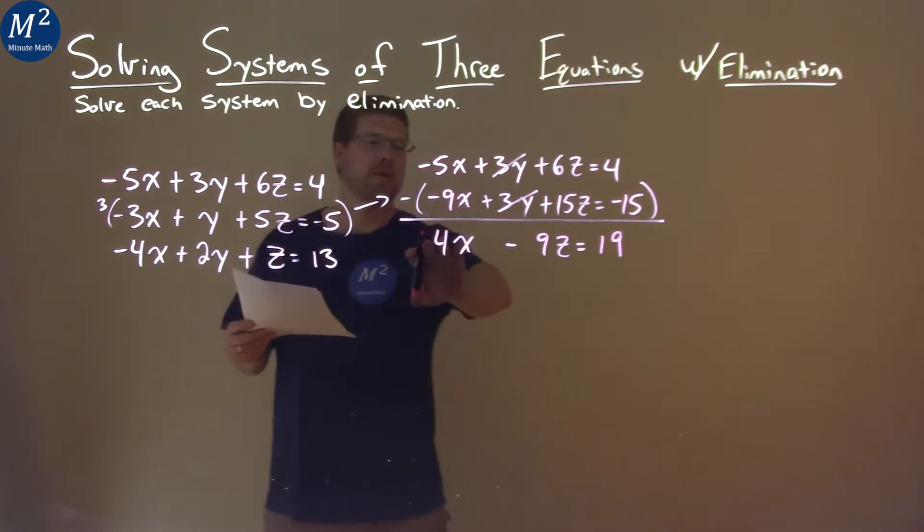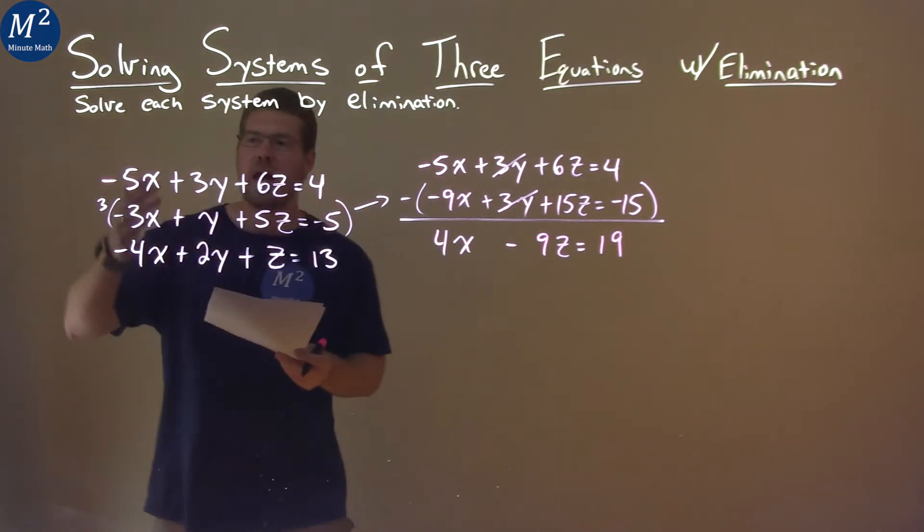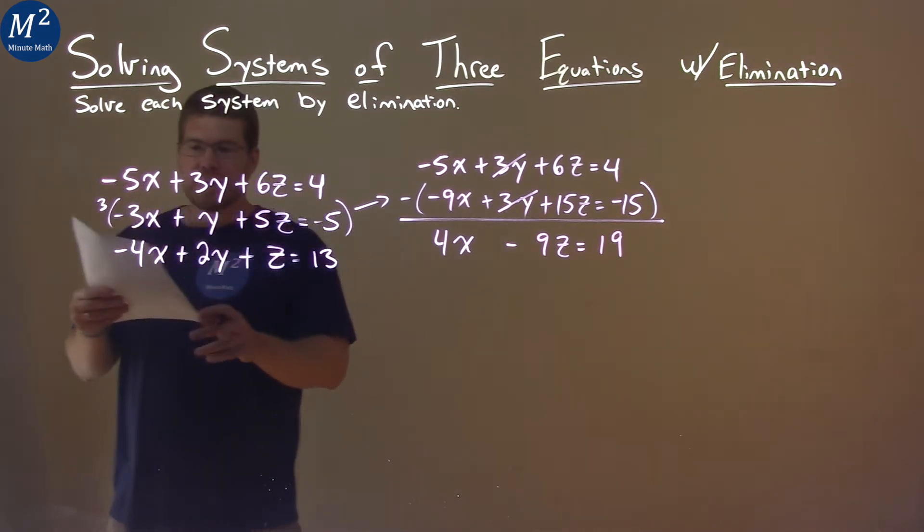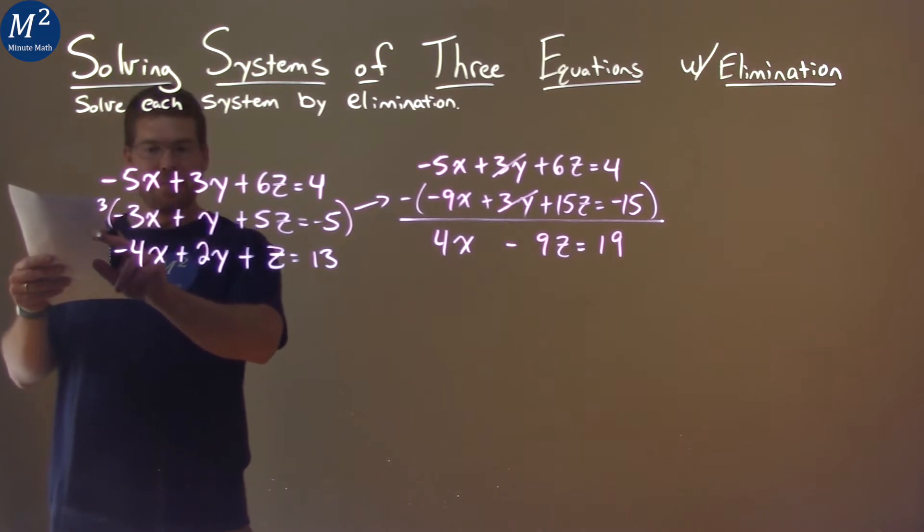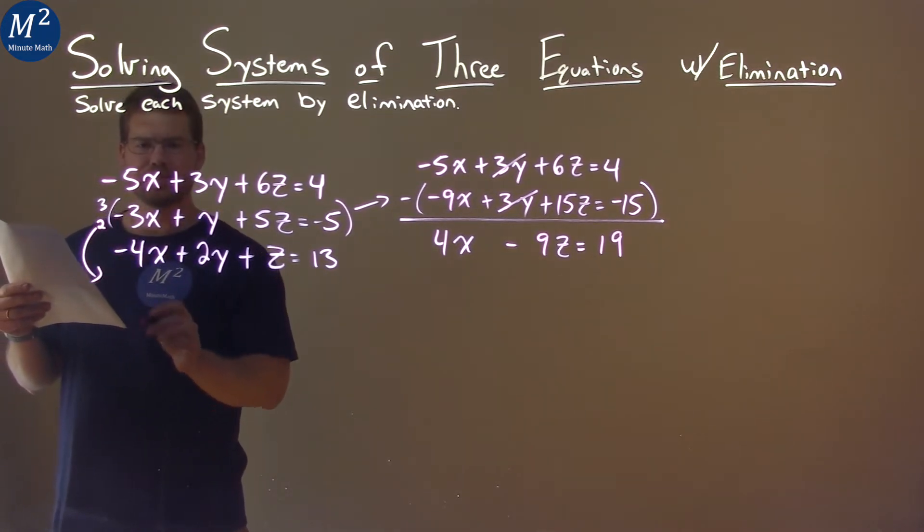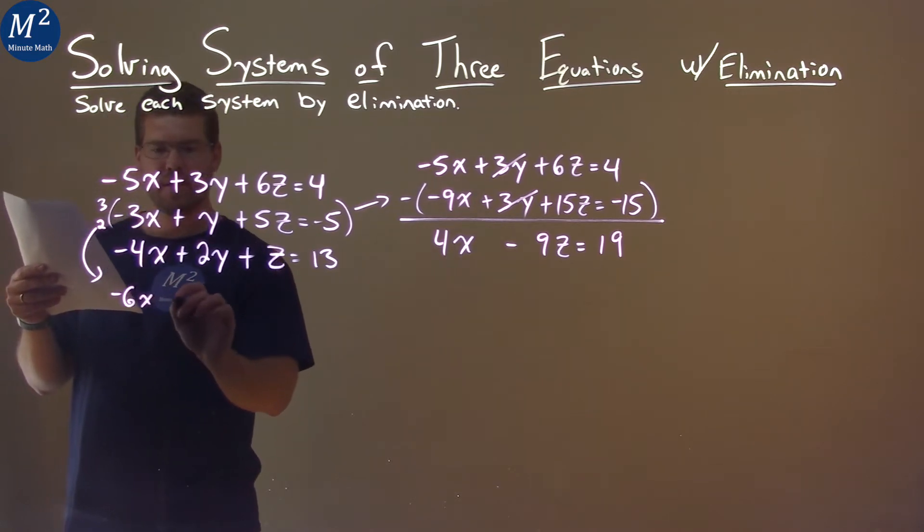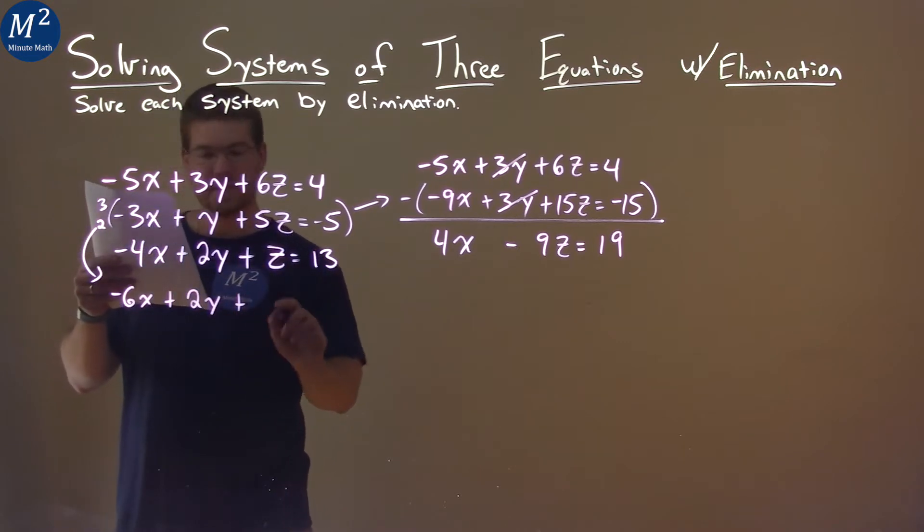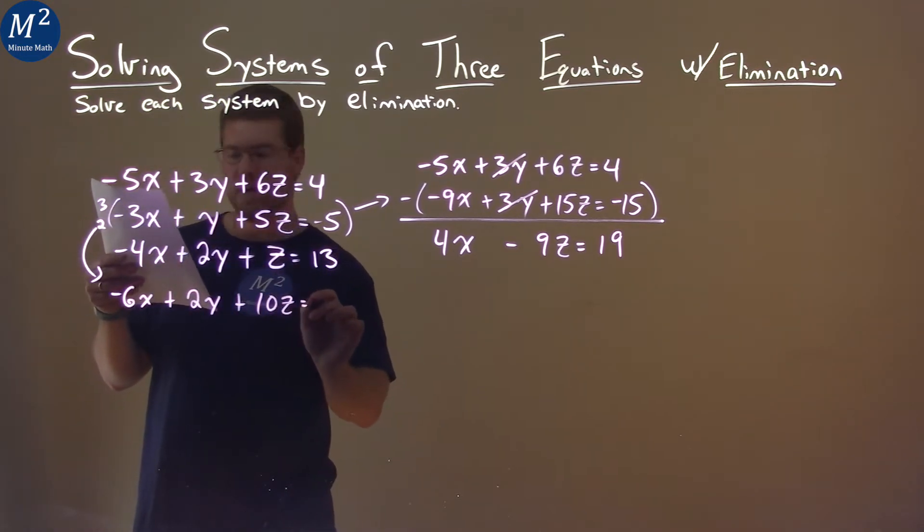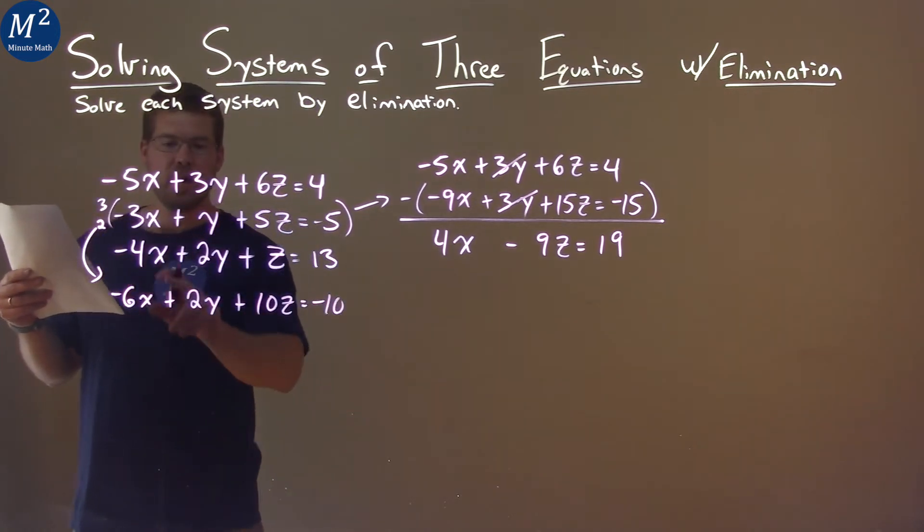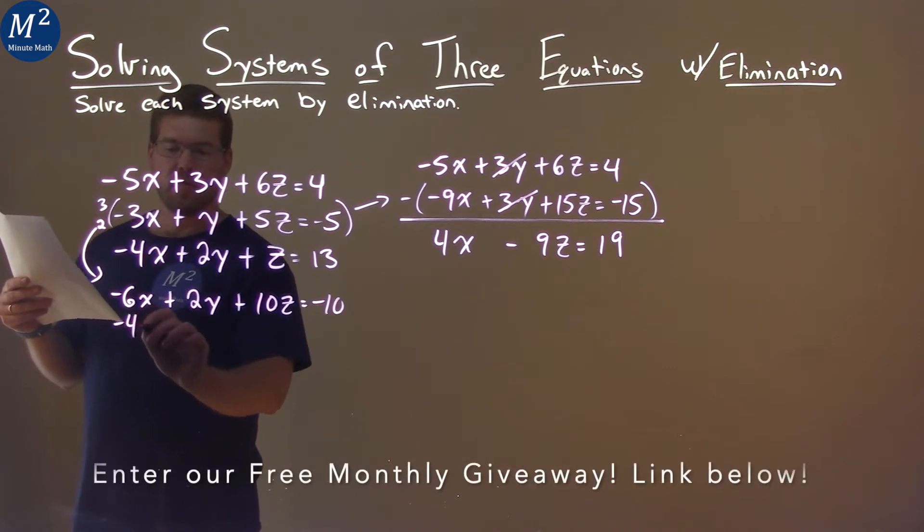So we have one equation here now with an eliminated variable. How else can we do this to eliminate the y's? If we take this middle equation again and we multiply it by 2, what do we get? Well, we have negative 6x here, plus 2y, plus 2 times 5 is 10, so we have 10z equals negative 10, negative 5 times 2. This third equation also has a 2y, and that's kind of why we did it. Let's bring it down.